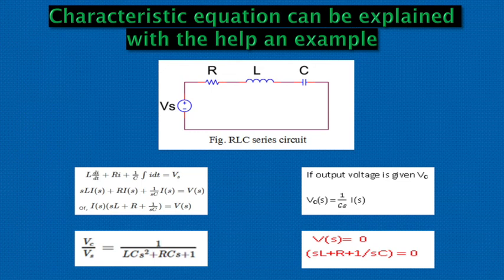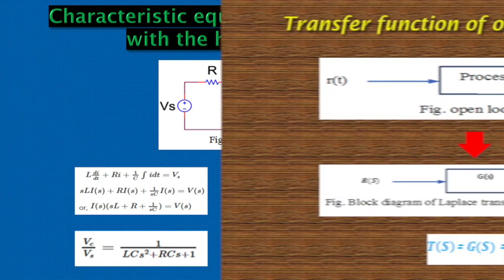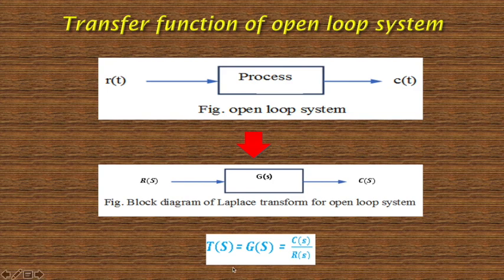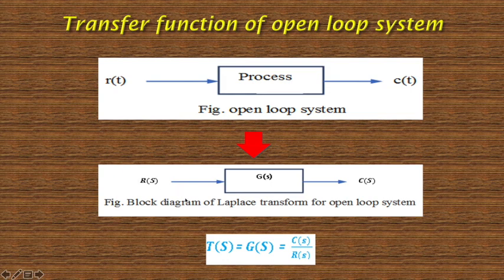That's why the characteristic equation is the denominator of the transfer function set equal to zero. Transfer function of open-loop system: a system can be defined by a transfer function which is a ratio of polynomials in the Laplace variable s, where input and output are R(t) and Y(t) respectively, and G(t) represents the gain or process of the system. By definition, G(s) equals C(s) divided by R(s), where G(s) is the Laplace transform of the forward path gain.